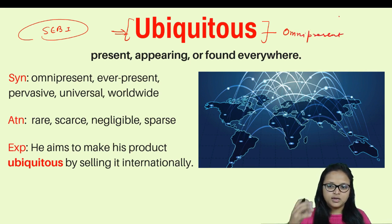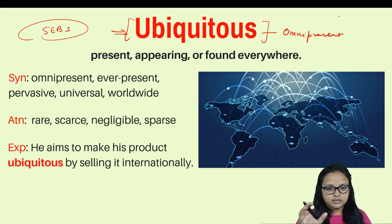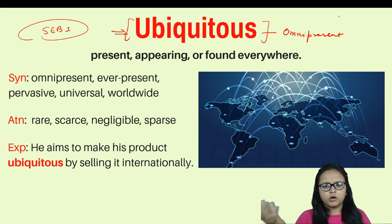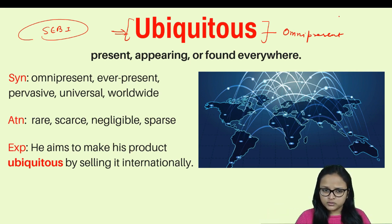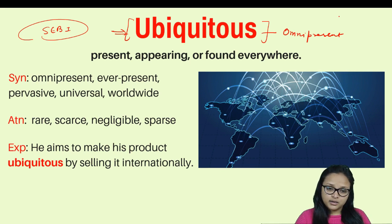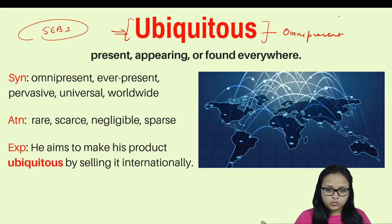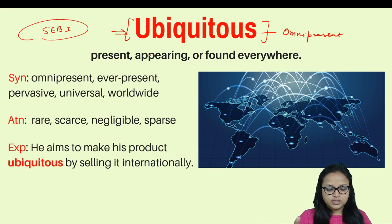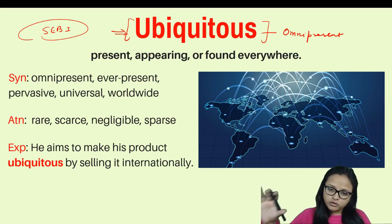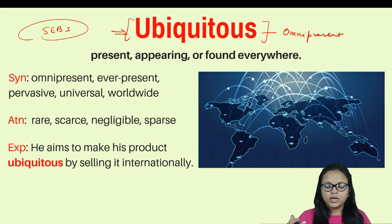Omni means everywhere and present means that it is present everywhere. So ubiquitous means appearing or found everywhere. For example, air is ubiquitous, and internet connection is very much prevalent all over the world. It is something that is found everywhere, wherever you go, and it is very hard to escape.